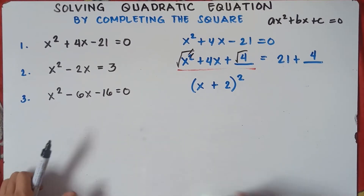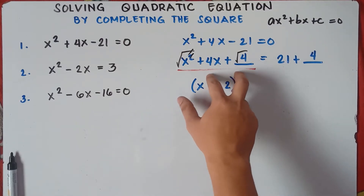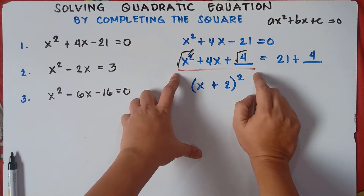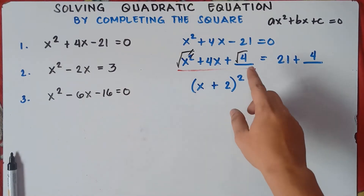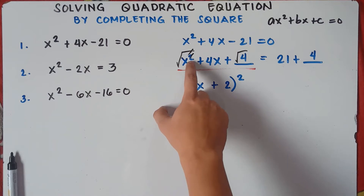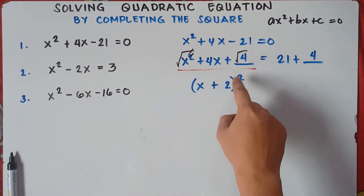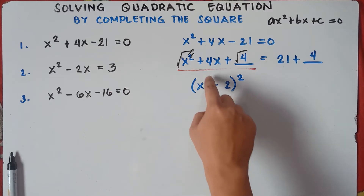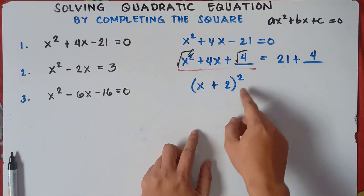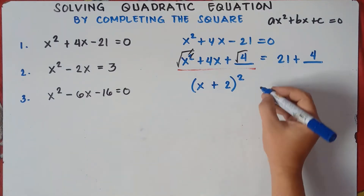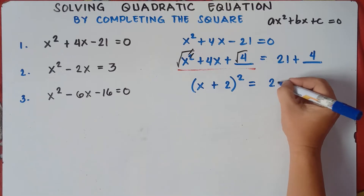Always remember: once you do the completing the square, your answer on the left side is a perfect square trinomial. You convert it into a squared binomial by getting the square root of the first term (x), the square root of the last term (square root of 4 is 2), copying the sign of the middle term, then adding parentheses and squaring. On the right side, 21 plus 4 equals 25.